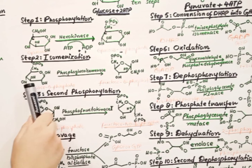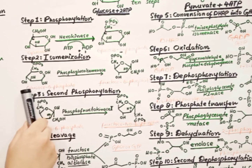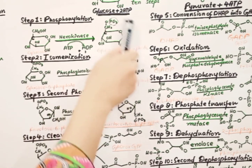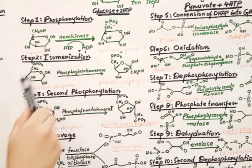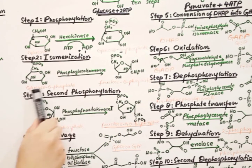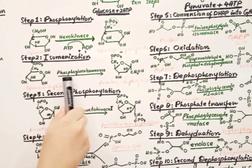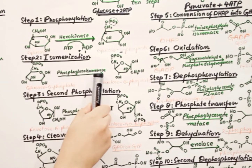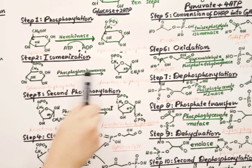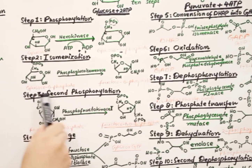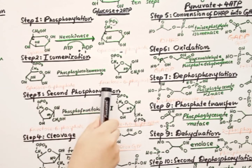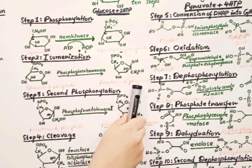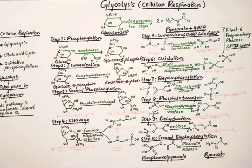Next is isomerization of glucose-6-phosphate. In the second step, glucose-6-phosphate is converted into fructose-6-phosphate with the help of the phosphoglucoisomerase enzyme.